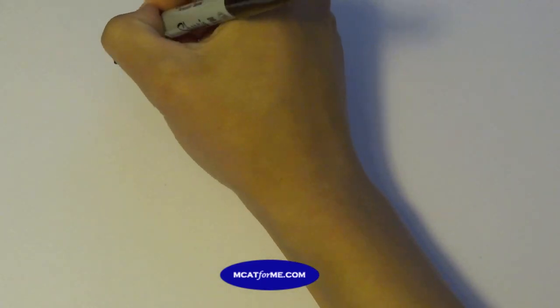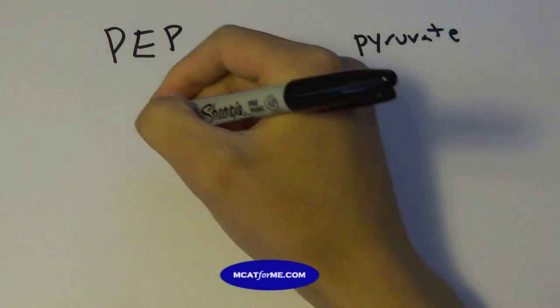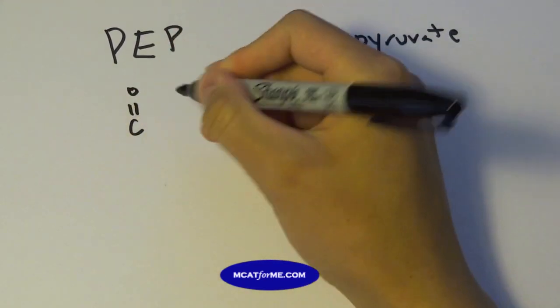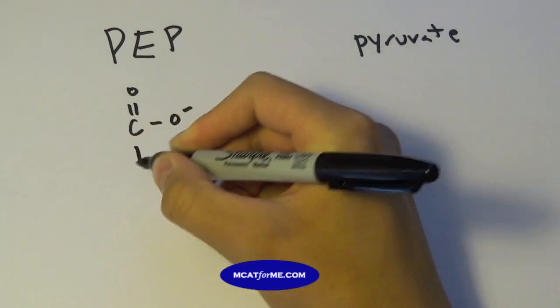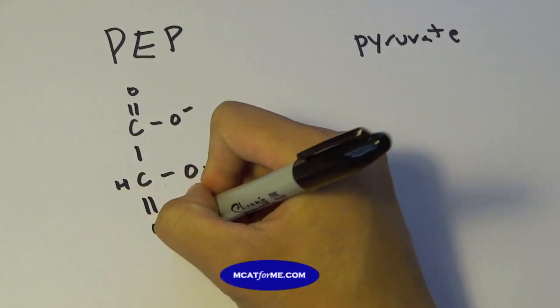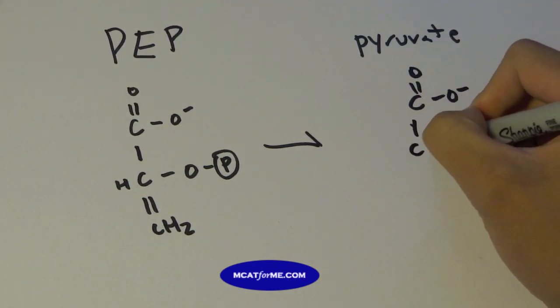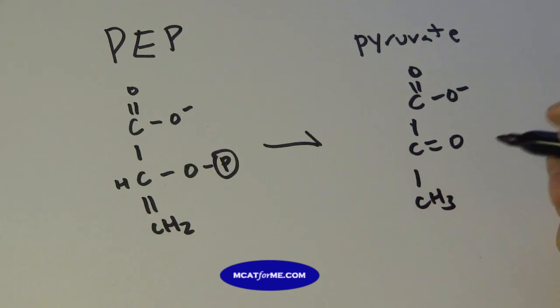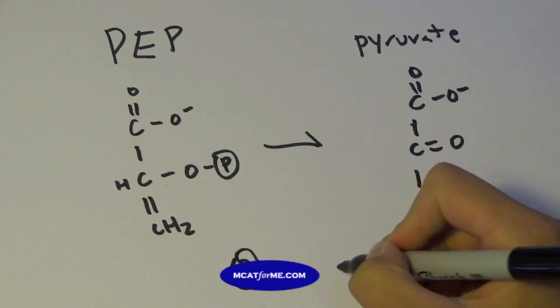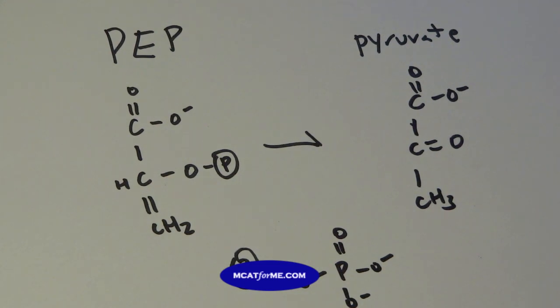And so PEP, let me draw those two out. So PEP versus pyruvate. These are our final two molecules, and those are the two that we actually have to remember. I think these are very important to know. So this is PEP. And so when we go from PEP to pyruvate, it's going to look something like this. Okay, so what this P is, if I did mention before, is just an inorganic phosphate group, but attached on. And so that's all you need to know, PEP versus pyruvate.